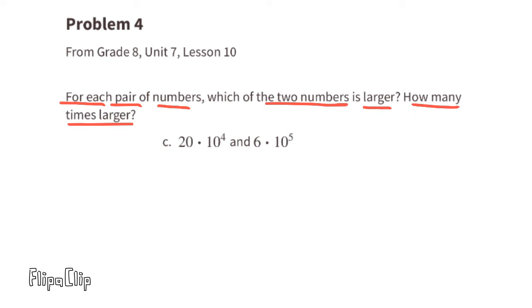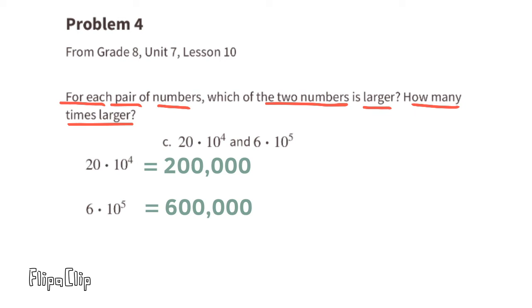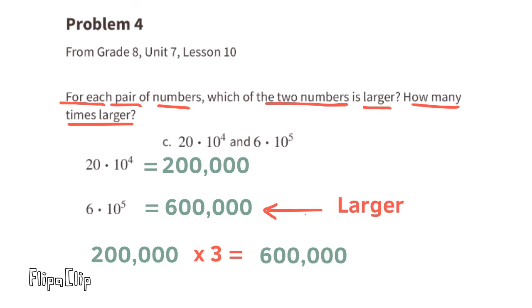Part C: 20 times 10 to the power of 4 and 6 times 10 to the power of 5. Twenty times 10⁴ is 200,000, and 6 times 10⁵ is 600,000. Since 600,000 is larger than 200,000, then 6 × 10⁵ is larger than 20 × 10⁴. They're being multiplied by different powers of ten. Since 200,000 times 3 equals 600,000, then 6 × 10⁵ is 3 times larger than 20 × 10⁴.